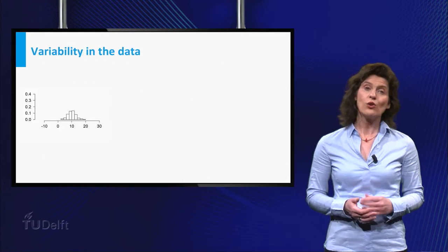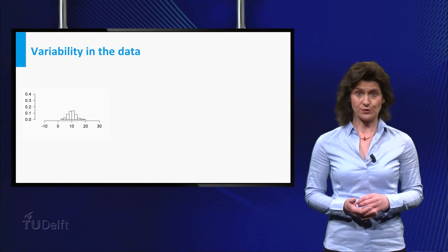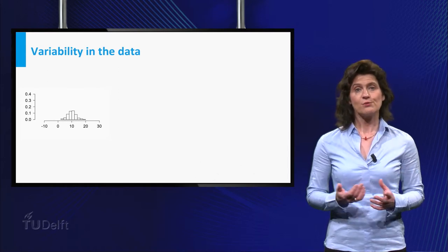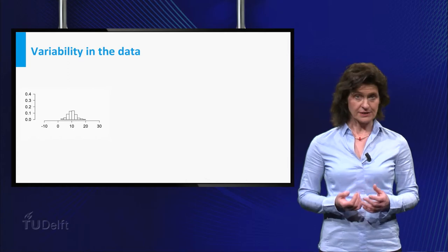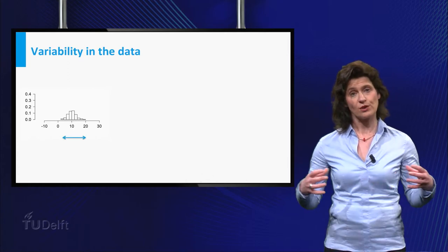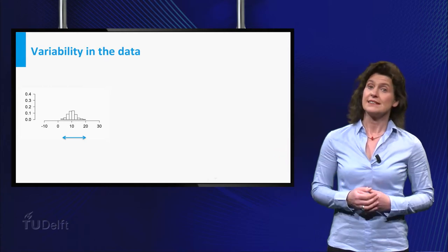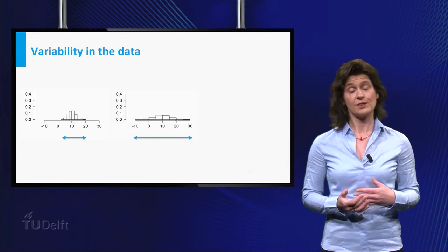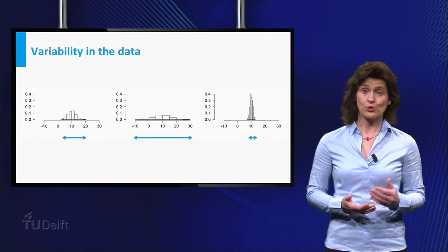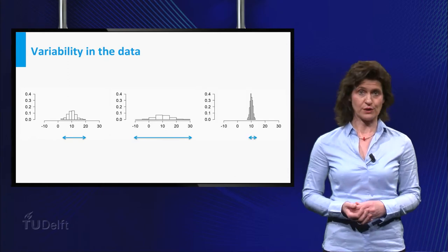Statisticians are also interested in the variability of the data around the center. In terms of the histogram of the data given here, the spread is related to the width of the bell shape. The spread in this dataset is less than the spread in the dataset visualized here. And this third dataset has even smaller variability.